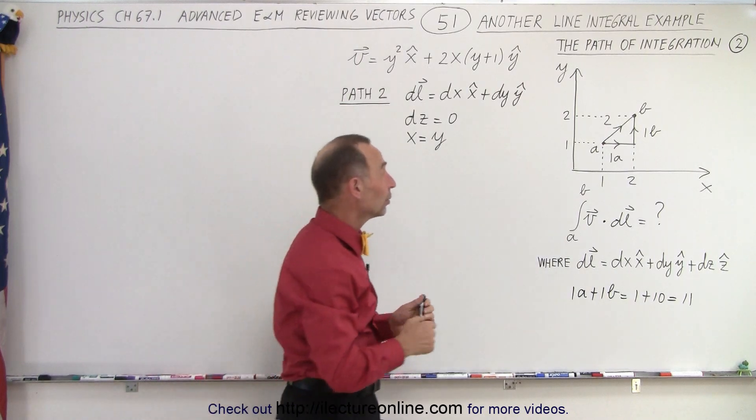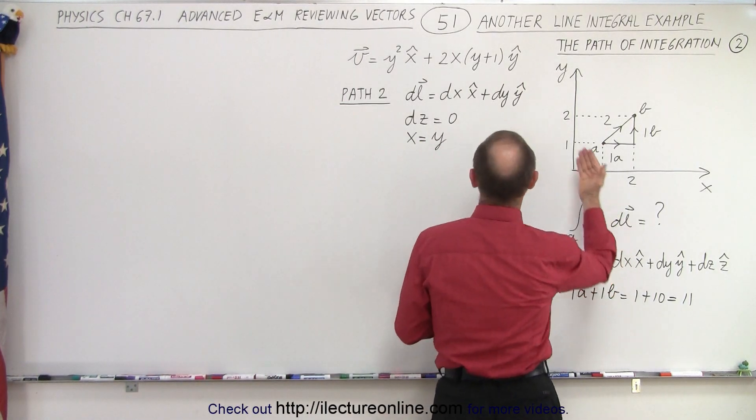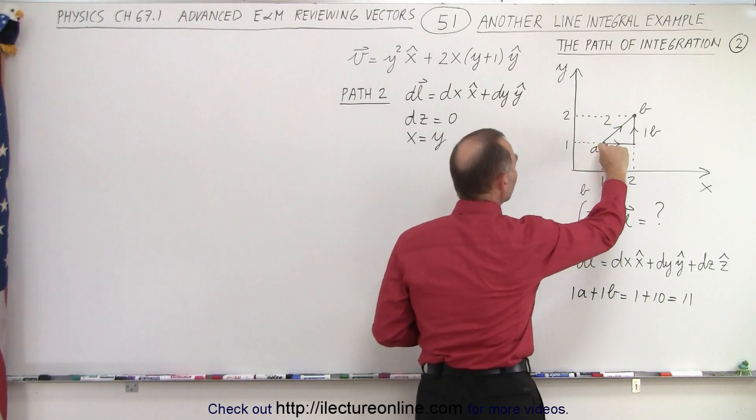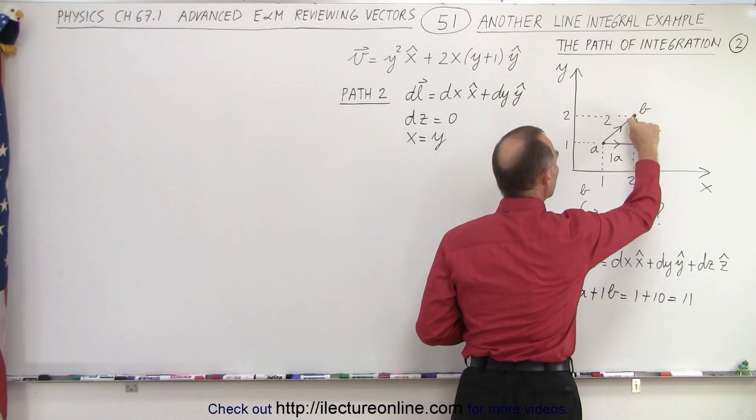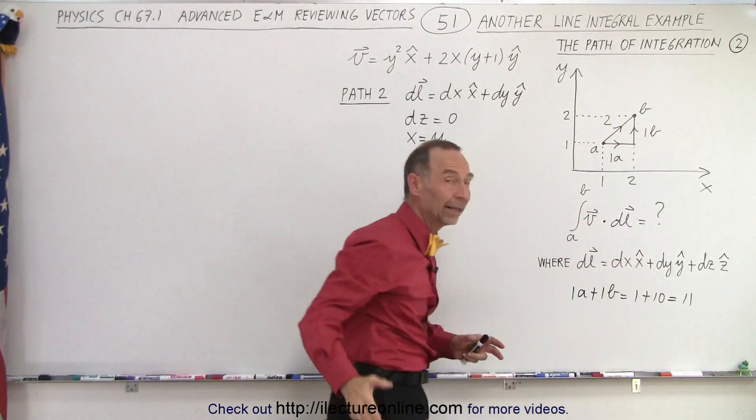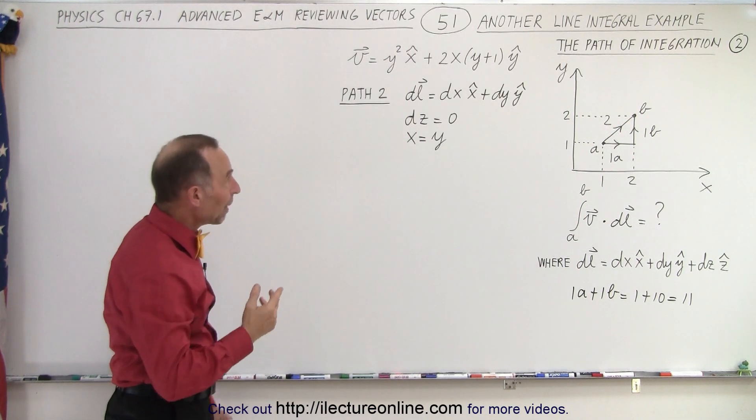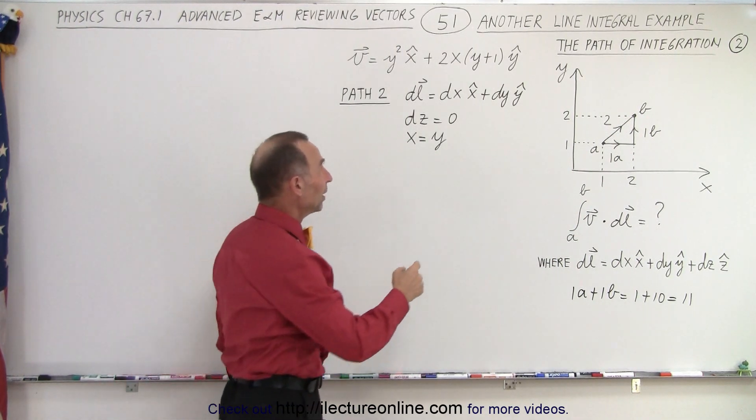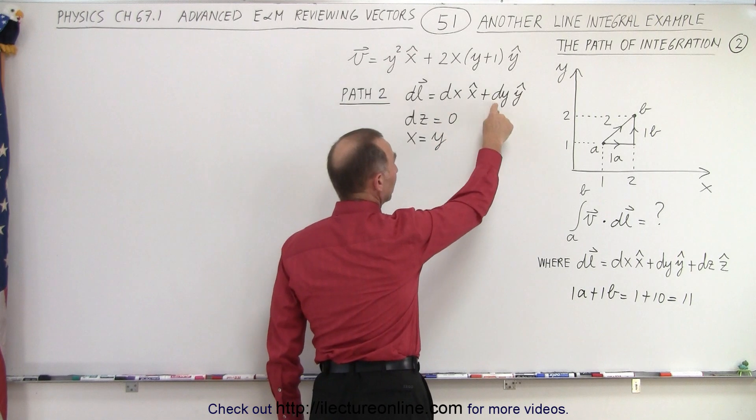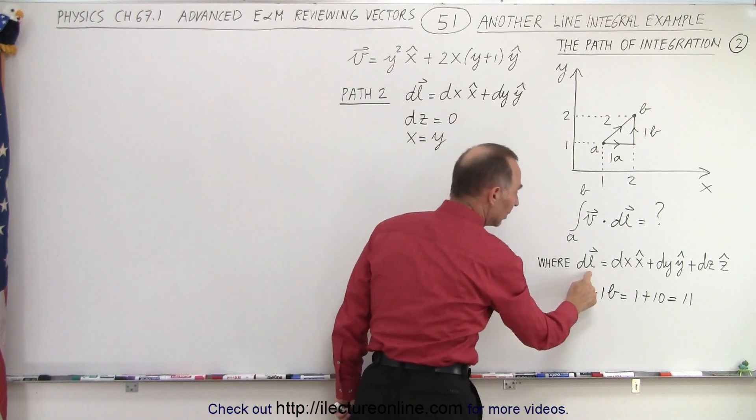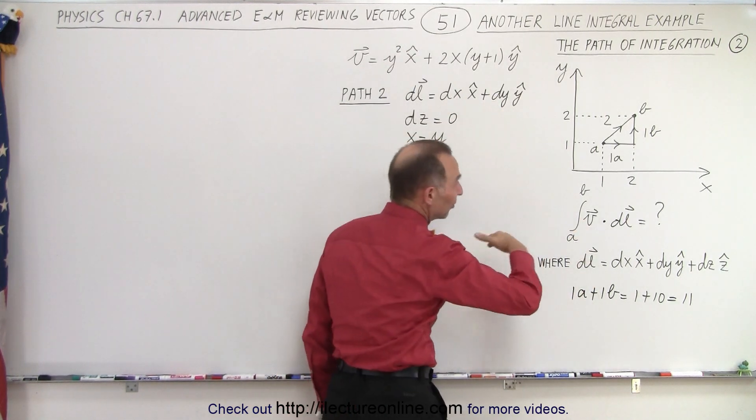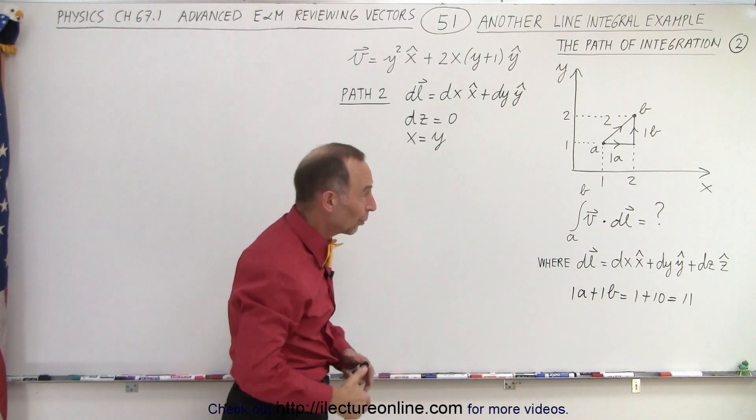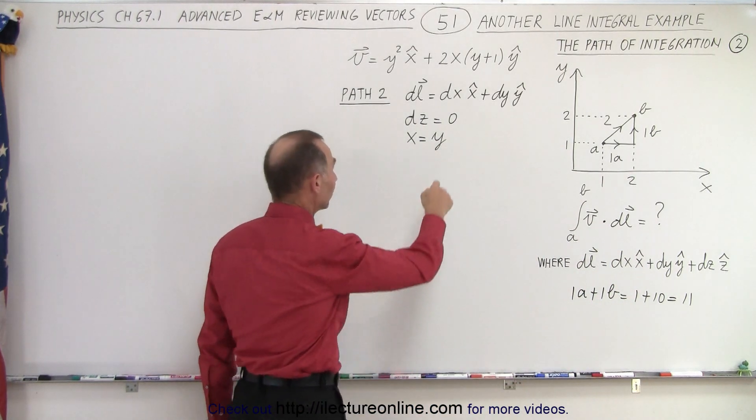Now we're going to take the line integral traveling through the same vector field defined right here, but now we're going to travel along path 2 from A to B straight along that angle path. Along path 2, we know that there's a displacement in the x direction and there's a displacement in the y direction. So our DL becomes equal to this because DZ in this case is equal to 0. We're in two dimensions here.